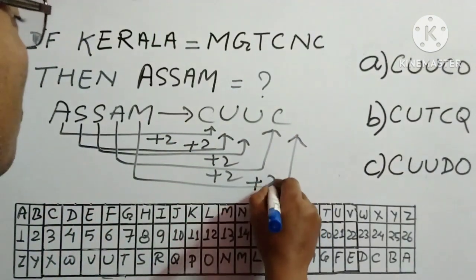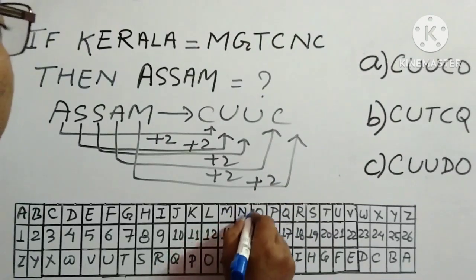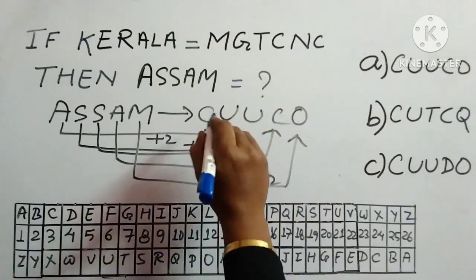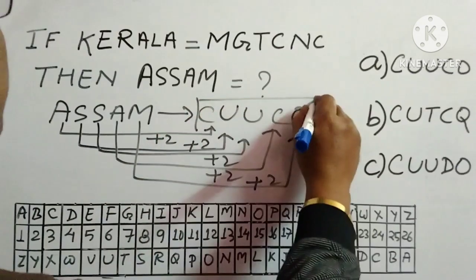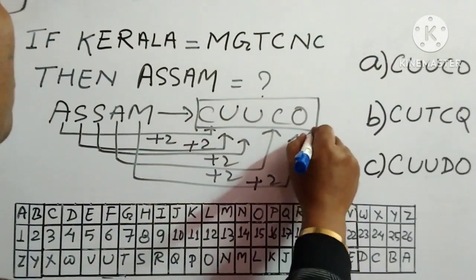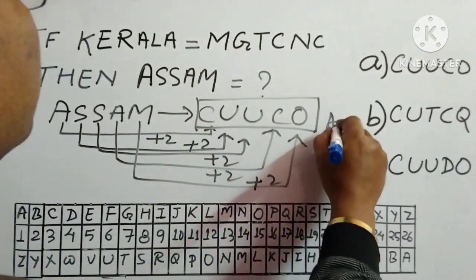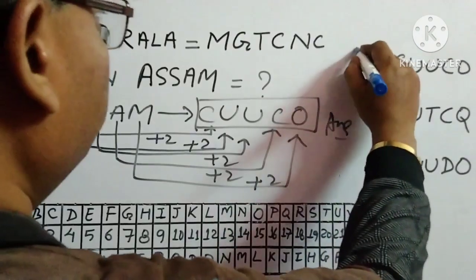And the last one is M. So plus 2. Where is M? Then N, O. So we have to write O over here. So this C, U, U, C, O is the answer which is option A.